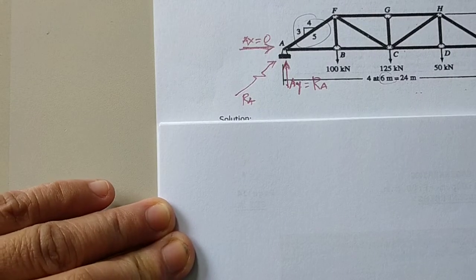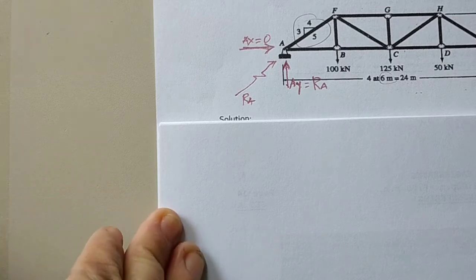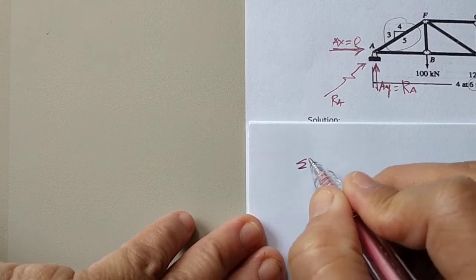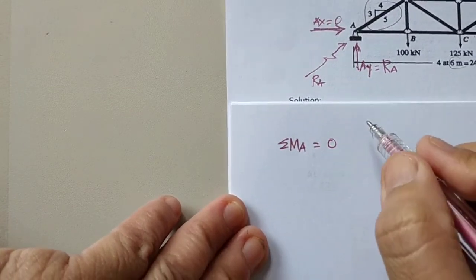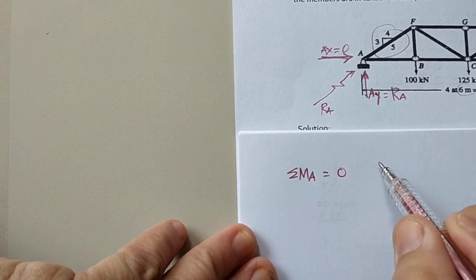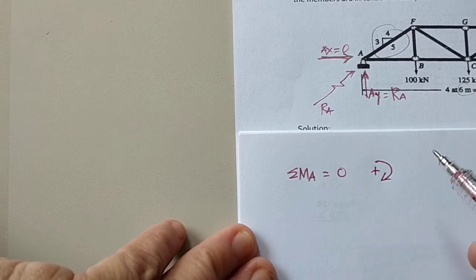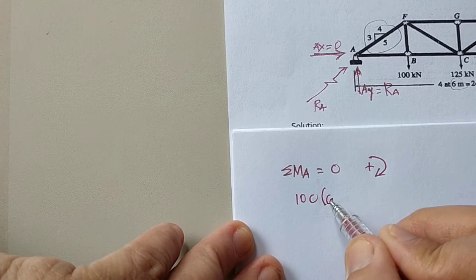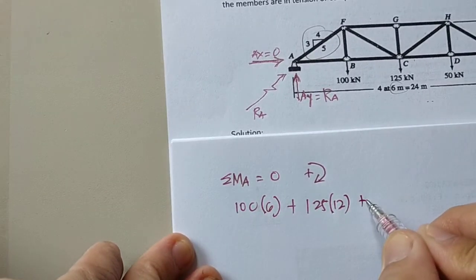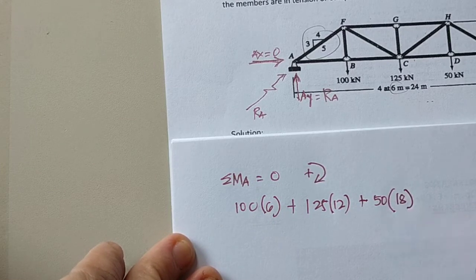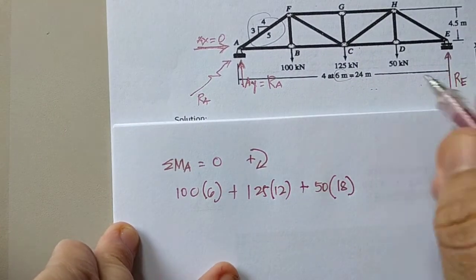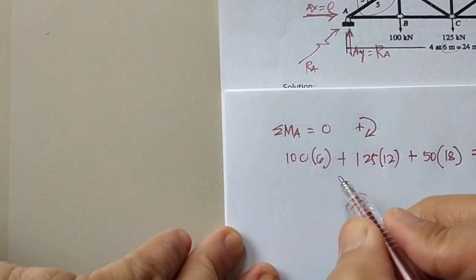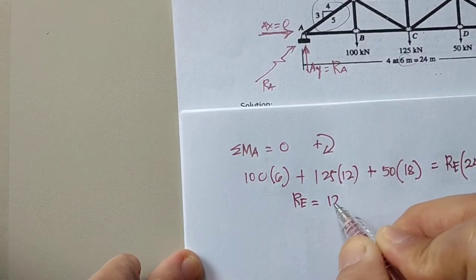By applying the equilibrium equations of moments and forces along the x and y axes, we can get the reaction values. Starting with the summation of moments at point A equals zero, with counterclockwise positive: 100 × 6 + 125 × 12 + 50 × 18 − RE × 24 = 0, giving RE = 125 kilonewtons acting upward.